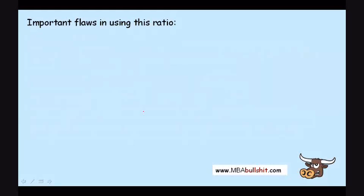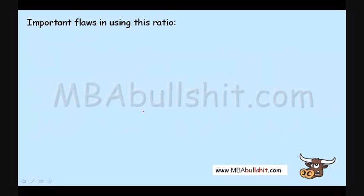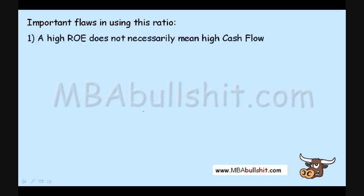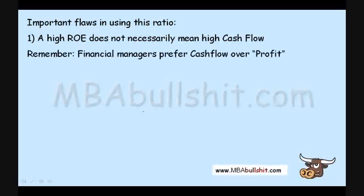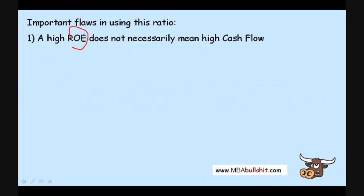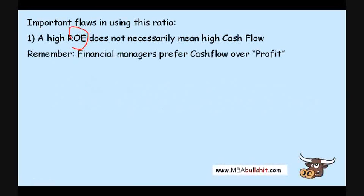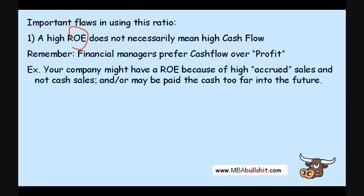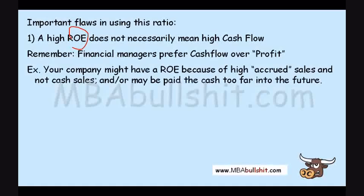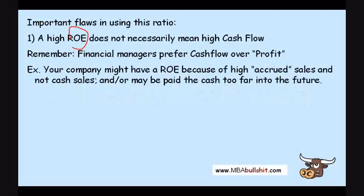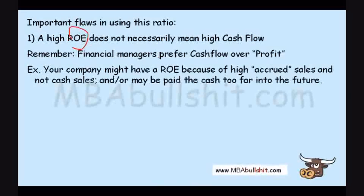There are some important flaws in using this ratio. First, a high ROE does not necessarily mean a high cash flow, because the ROE formula uses profit instead of cash flow. Financial managers prefer cash flow over profit. Your company might have a high ROE because of high accrued sales — meaning you made a sale but your customer hasn't paid you yet — which increases profit without increasing cash flow. The cash from these sales might also be paid far into the future.